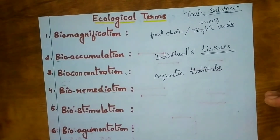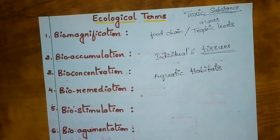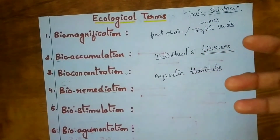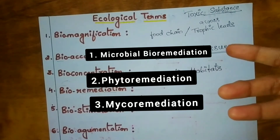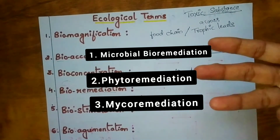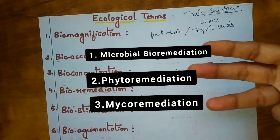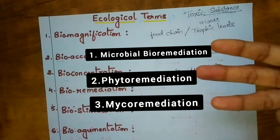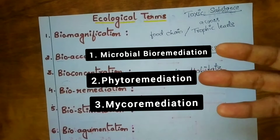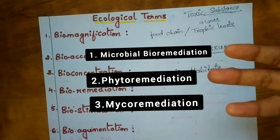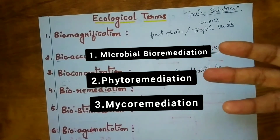There are three types of bioremediation. The first is microbial bioremediation — using microbes. The second is phytoremediation — using plants. The third is mycoremediation — using fungi.